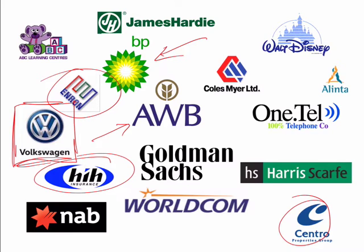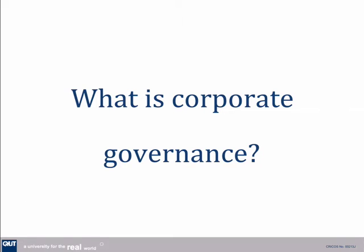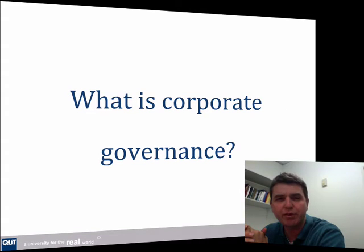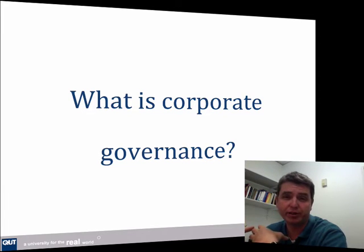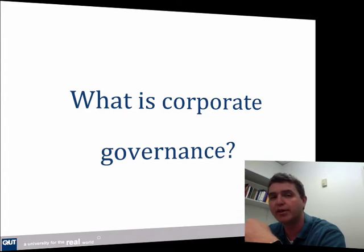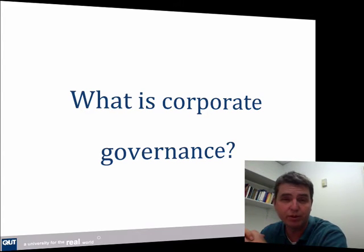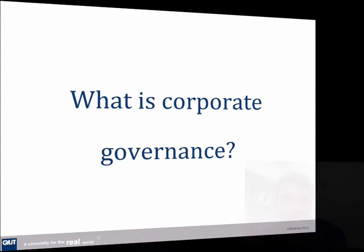Corporate governance involves the decisions that occur in companies, which are separate legal entities. The term corporate governance has only been around for about 20 years, so that means it can mean a lot of different things to a lot of different people. Some people emphasise the issues involving compliance and legality, while others see a much broader role in terms of performance of the organisation as well. Here are a couple of examples of definitions.